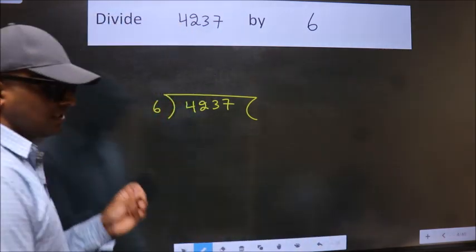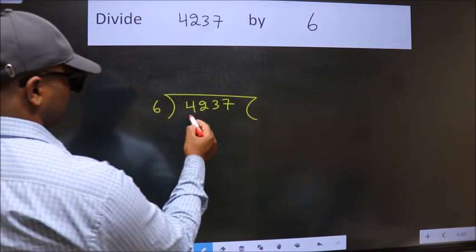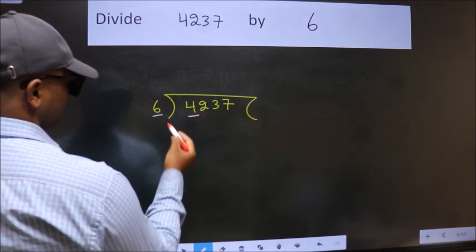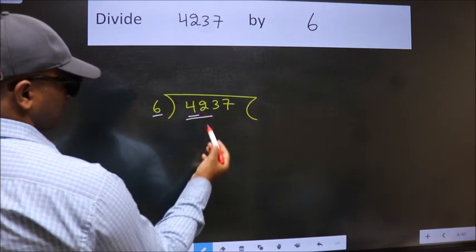This is your step 1. Next, here we have 4, here 6. 4 is smaller than 6. So, we should take 2 numbers, 42.